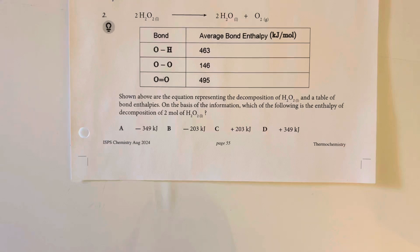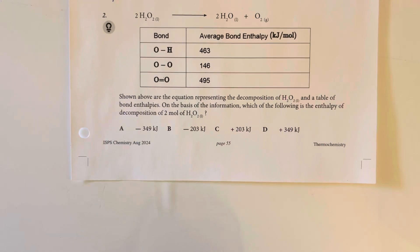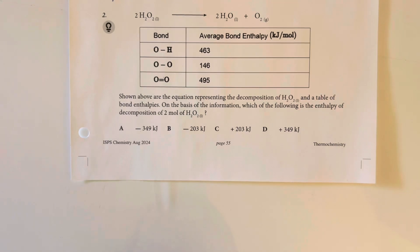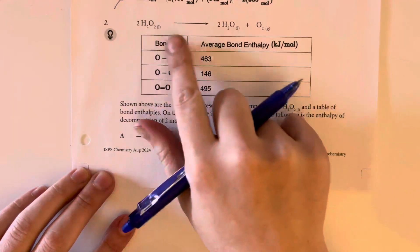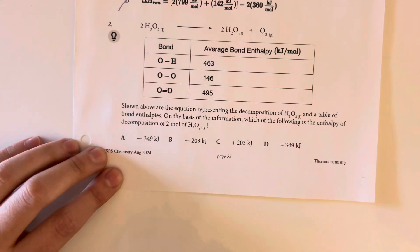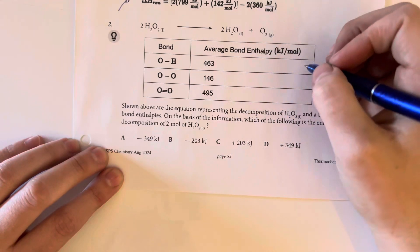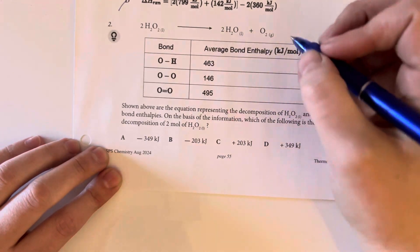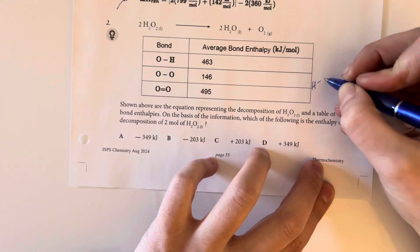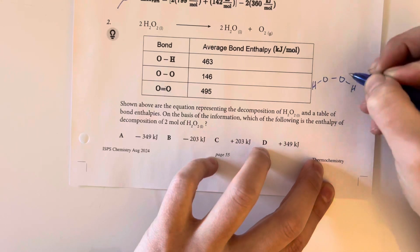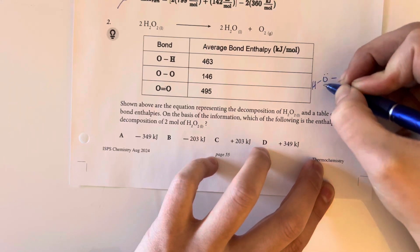Shown above are the equations representing the decomposition of hydrogen peroxide and a table of bond enthalpies. On the basis of this information, which of the following is the enthalpy for the decomposition of two moles of hydrogen peroxide? We're going to figure out what each of the enthalpies are. For the hydrogen peroxide, we have this structure here.